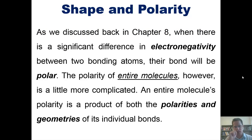That takes us then to a different subject. As we discussed back in Chapter 8, when there is a significant difference in electronegativity between two bonding atoms, their bond will be polar. The polarity of entire molecules, however, is a little bit more complicated. An entire molecule's polarity is a product of both the polarities and the geometries or shapes of all of the individual bonds in that molecule.